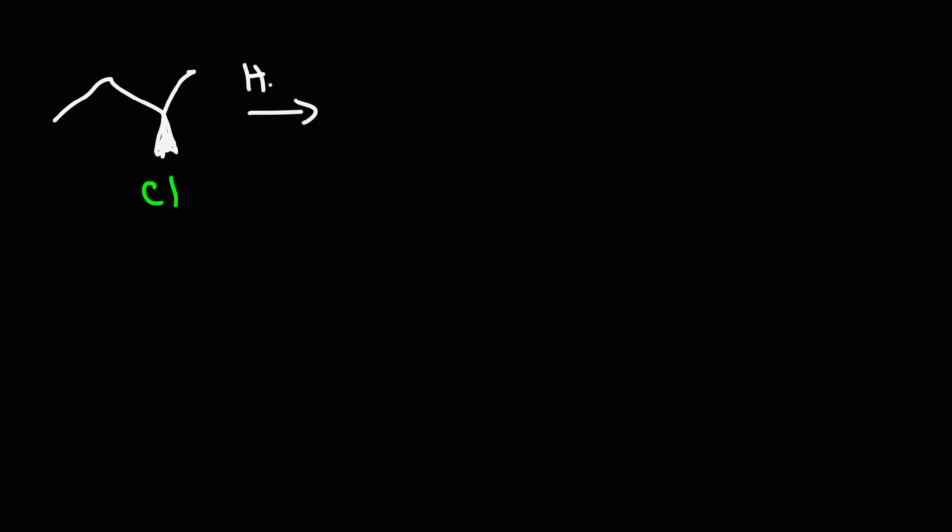Let's look at another example. Say we have 2-chlorobutane and we're going to react it with water. Go ahead and predict the products of this reaction and write up the mechanism. By the way, for those of you studying SN1, SN2, E1, E2 reactions, I have a practice test on that available to download in the description section below. So now let's continue. The first step: the leaving group is going to leave, and we're going to get a secondary carbocation intermediate.